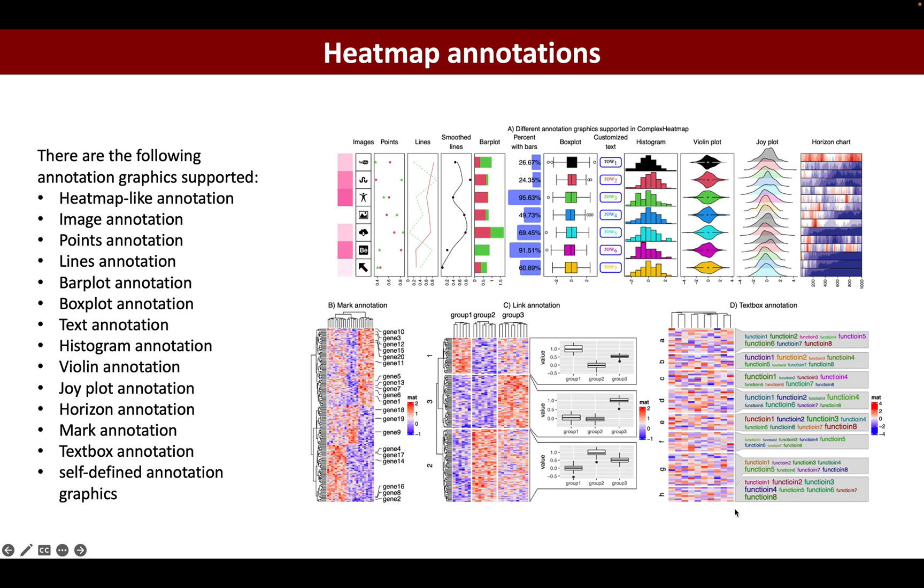Figure C is called the link annotation which links plot and plotting regions to heatmaps. Figure D is a special case called the text box annotation which links text boxes to heatmaps.